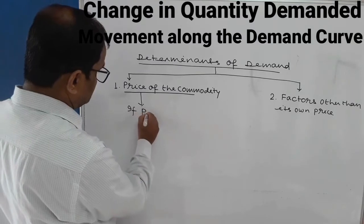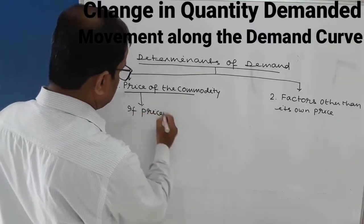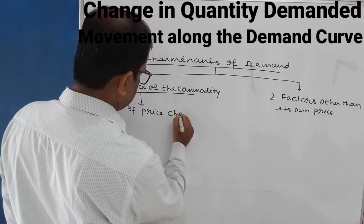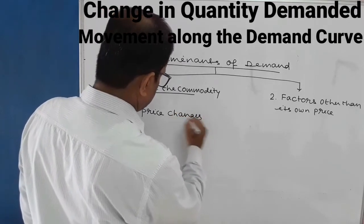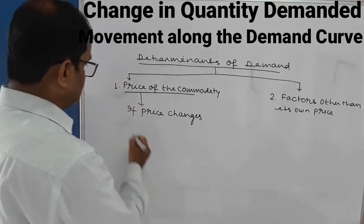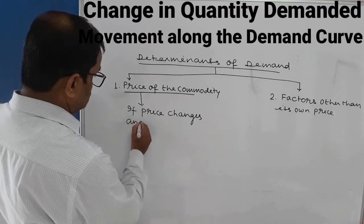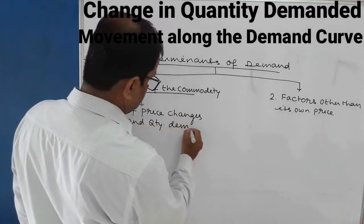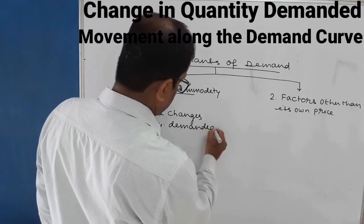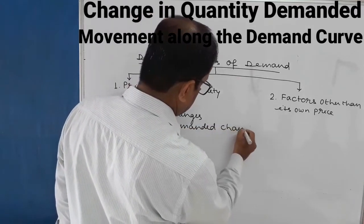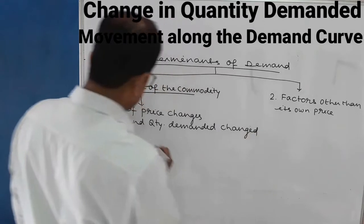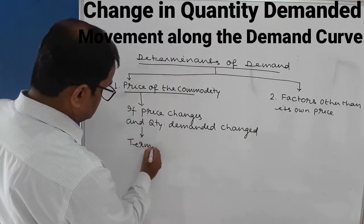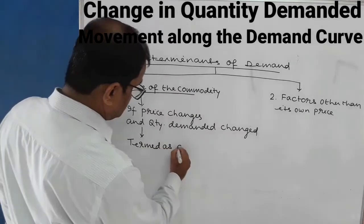Now look at the first factor: the price of the commodity. If price changes — meaning an increase or decrease — the quantity demanded of that commodity also changes. This is termed as change in quantity demanded.